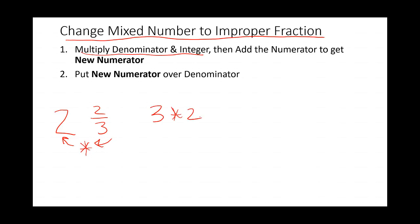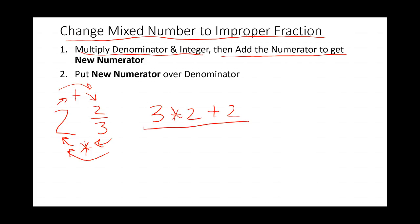We're going to write 3 times 2 off to the side. Then we add the numerator — draw an arrow, a plus symbol, and another arrow. We had to do step 1 multiplying, and now we add the result to the numerator 2. So plus 2, draw our fraction bar, list the denominator. And there we go — equal sign — we get 6 plus 2 over 3 equals 8 over 3. There it is, our improper fraction.